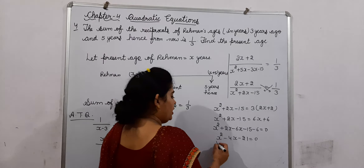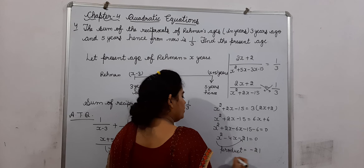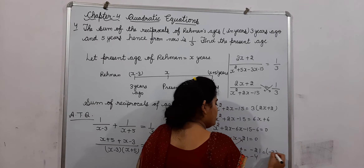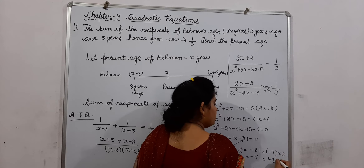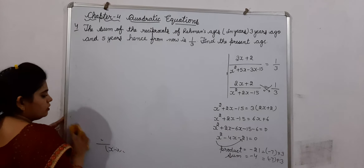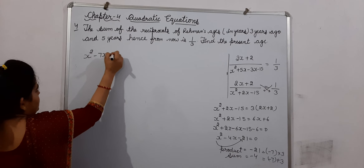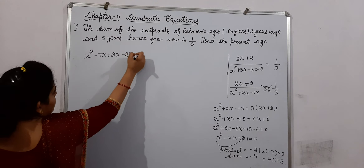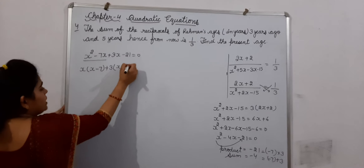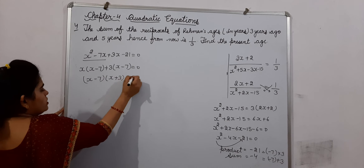Now I am using the middle-term splitting method. Product is minus 21 and sum is minus 4. The factors are minus 7 and plus 3, since minus 7 multiplied by 3 is minus 21 and minus 7 plus 3 is minus 4. So the equation becomes X squared minus 7X plus 3X minus 21 equals 0, giving X(X minus 7) plus 3(X minus 7) equals 0, and therefore (X minus 7)(X plus 3) equals 0.